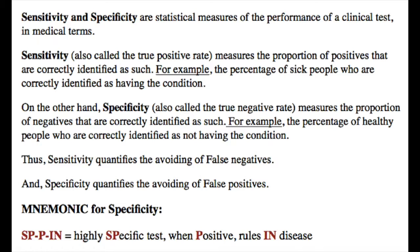The mnemonic for specificity is SpIN, with two Ps, where SP stands for specificity, P is for positive, and N is for ruling in a disease. A highly specific test, when positive, rules in disease.